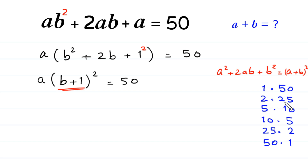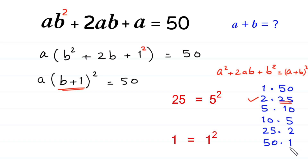In the factor pair 2×25, the second factor 25 is a perfect square — 25 is the square of 5. So we select this pair. We also consider the pair 50×1, where 1 is also a perfect square. We have two cases to solve.